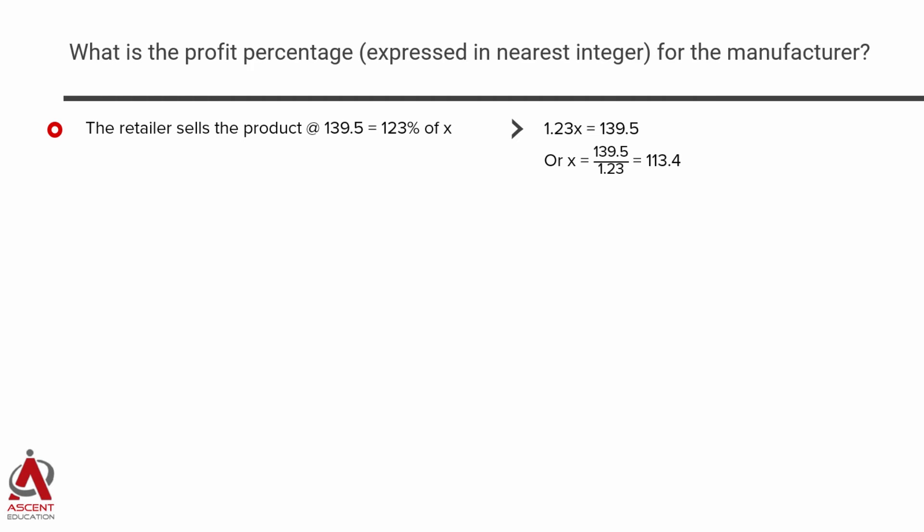Now let's compute x. The retailer is selling at 139.5, and also at 1.23x. So 1.23x = 139.5, which gives x = 139.5 / 1.23 = 113.4. So x, the cost of the retailer, is 113.4.